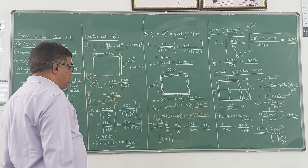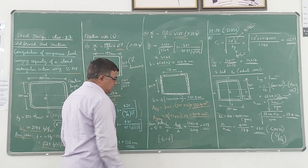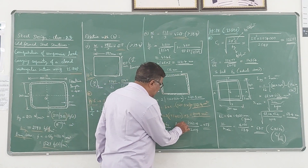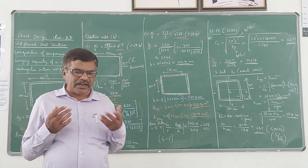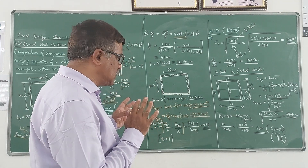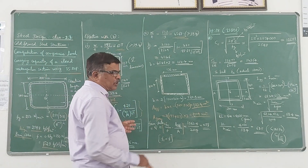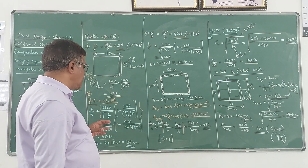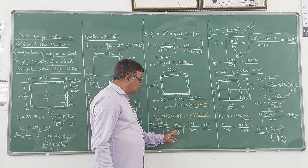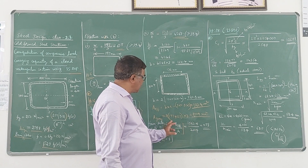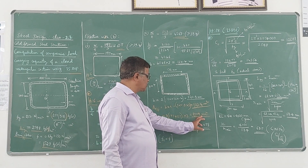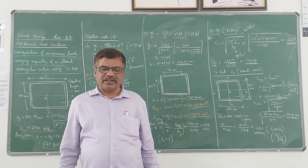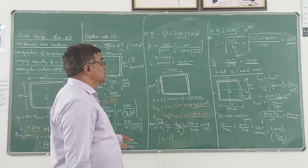Now we calculate an important parameter called the form factor, denoted by Q. It is defined as Fc/Fy × (A_effective / A_gross), and gives an idea of how much area is actually utilized when carrying the compressive load. Here A_effective = 1562.4 mm² and A_gross = 2004 mm². Simplifying gives Q = 0.78.